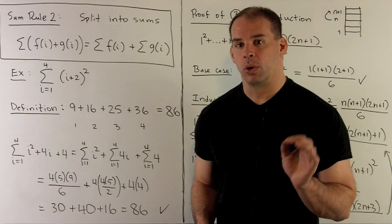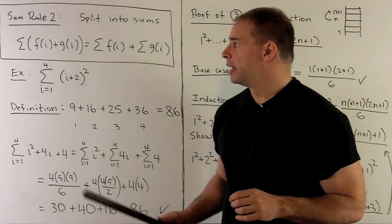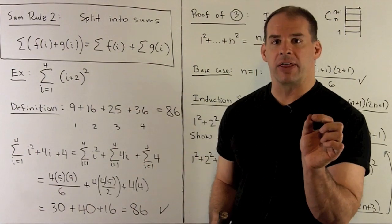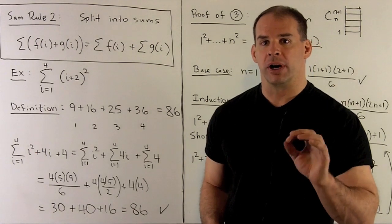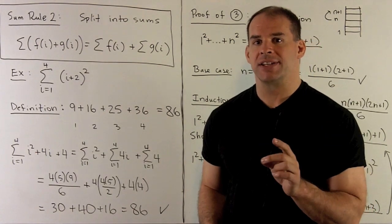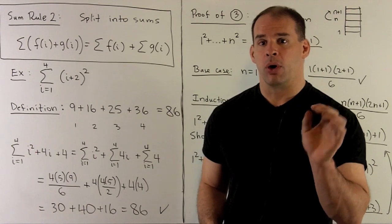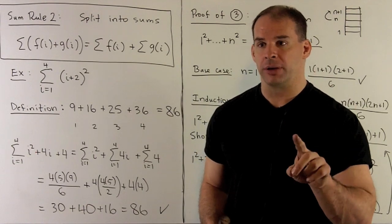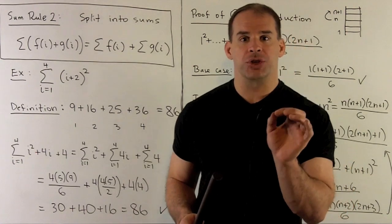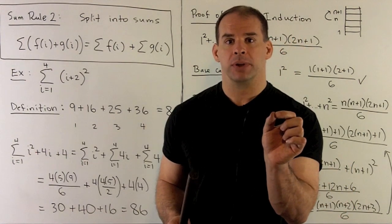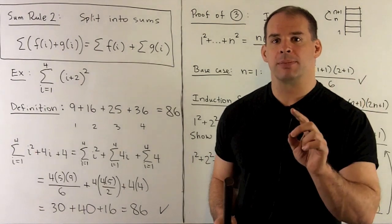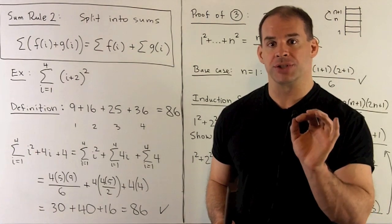Here's another summation rule we'll get a lot of mileage out of. If we take two functions f and g, add them together, and take the sum over a given range of integers, the rule says we can work out the sum over the range for each function separately, figure out those answers, and then add them together. This rule says we can split sums into separate summations.